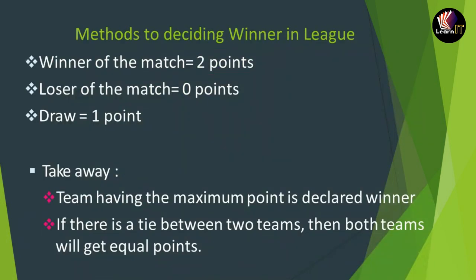Now let us move to methods of deciding the winner in a league tournament. Points are allotted as follows: for a win, 2 points are given; for a loss, 0 points; and for a draw, 1 point is given to each team. The team with the maximum points is declared the winner. For example, if a team has 10 points and another has only 4 points, the one with the highest points wins. If there is a tie between two teams with equal points, both teams are considered equal.